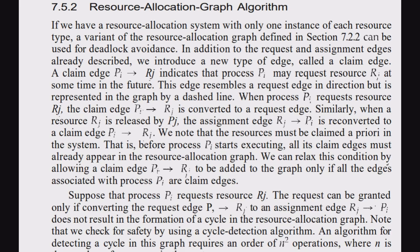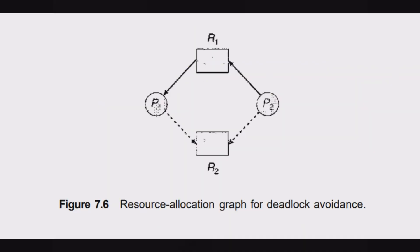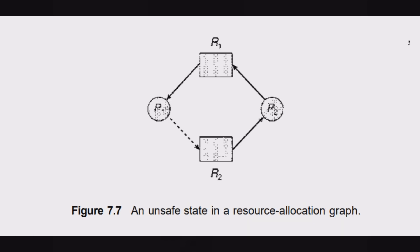The second method to avoid deadlock is the resource allocation graph. In this method, resources and processes are represented as vertices, and requests and allocations are represented as edges. As shown in the image, R1 and R2 are resources and P1 and P2 are processes. Processes P1 and P2 are requesting R2, and resource R1 is allocated to P1. In an unsafe state example: R2 is allocated to P2, but P2 is requesting R1, which is already allocated to P1, and P1 is requesting R2 — this is a deadlock situation.